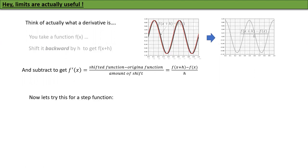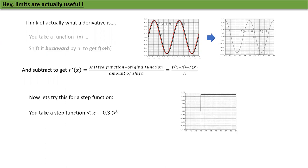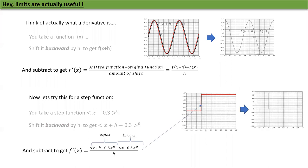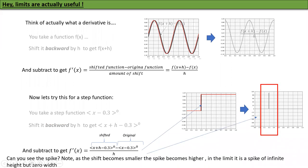Let's apply this to a step function. Here's the original function ⟨x−3⟩^0, a nice step function. We shift it backward by h to get ⟨x+h−0.3⟩^0. You can see that little shift backwards. Subtract to get f′: shifted minus original divided by h. When you do that you will suddenly see a spike. Note: as the shift becomes smaller and smaller the spike becomes higher, and in the limit it's a spike of infinite height but zero width.